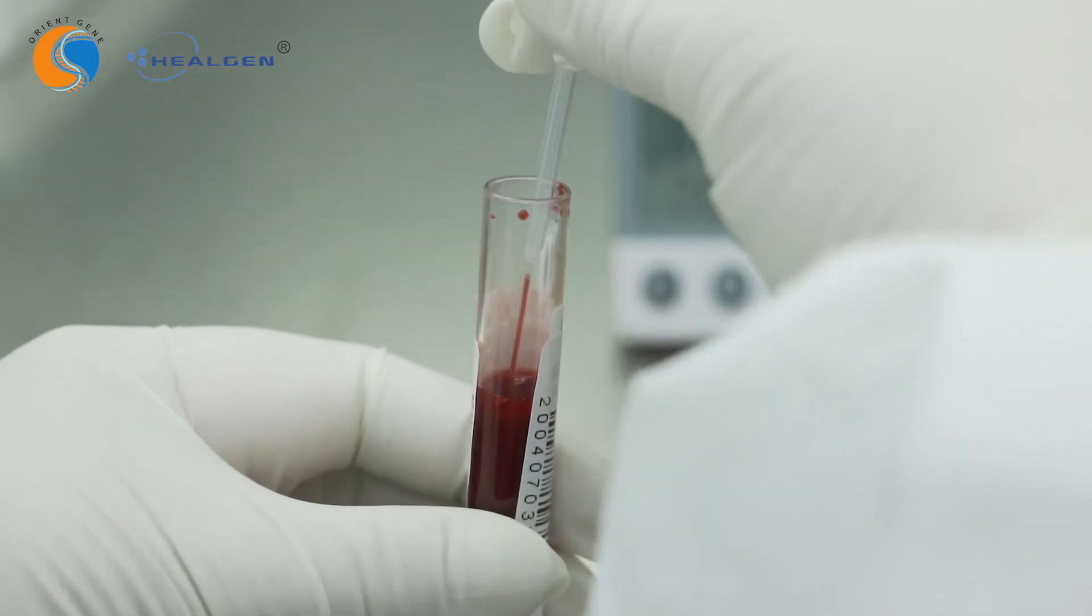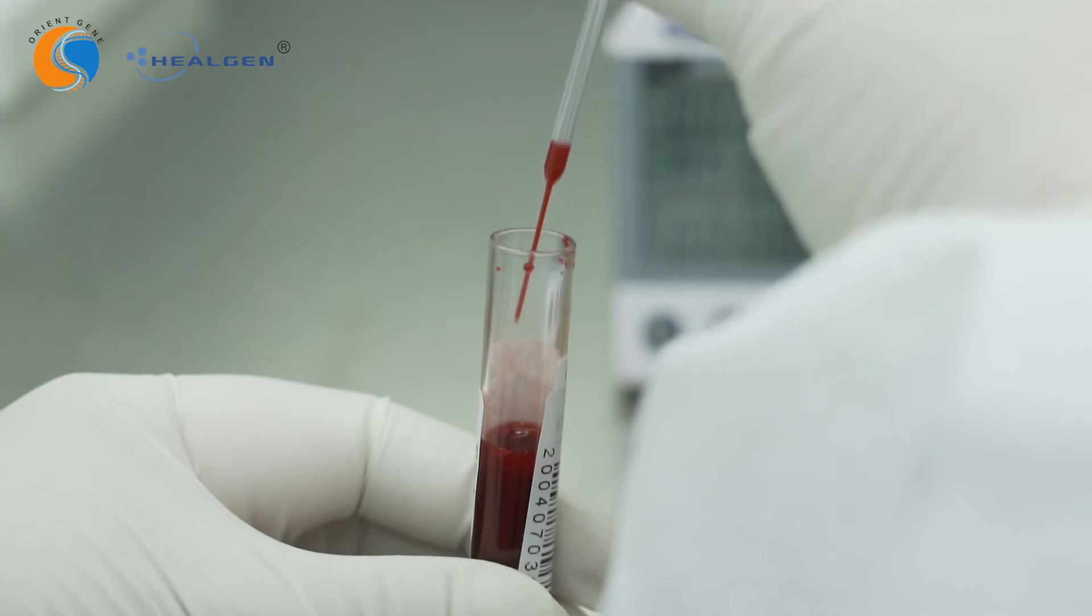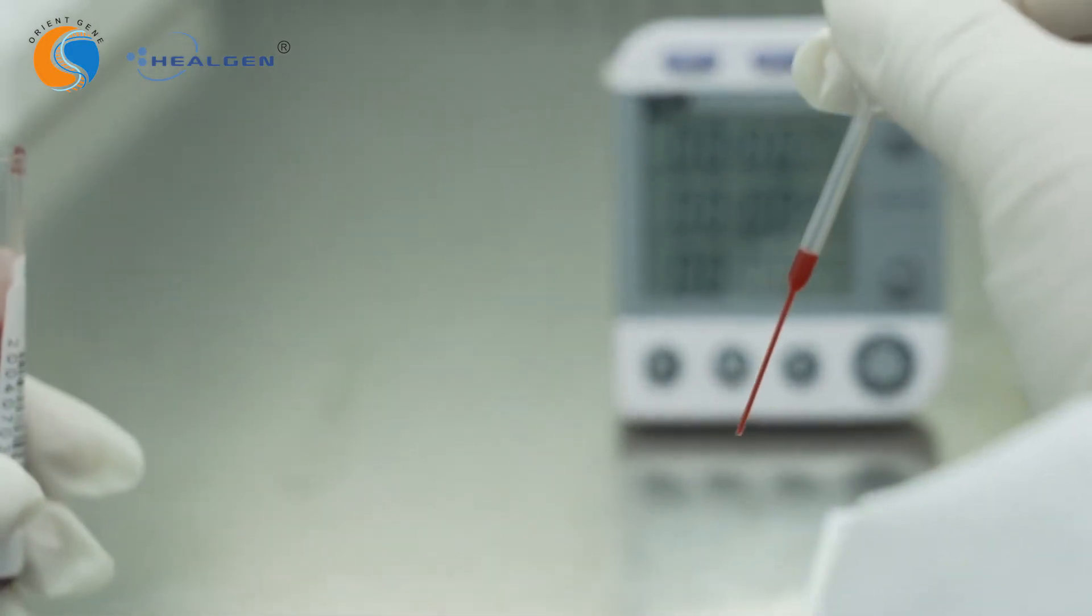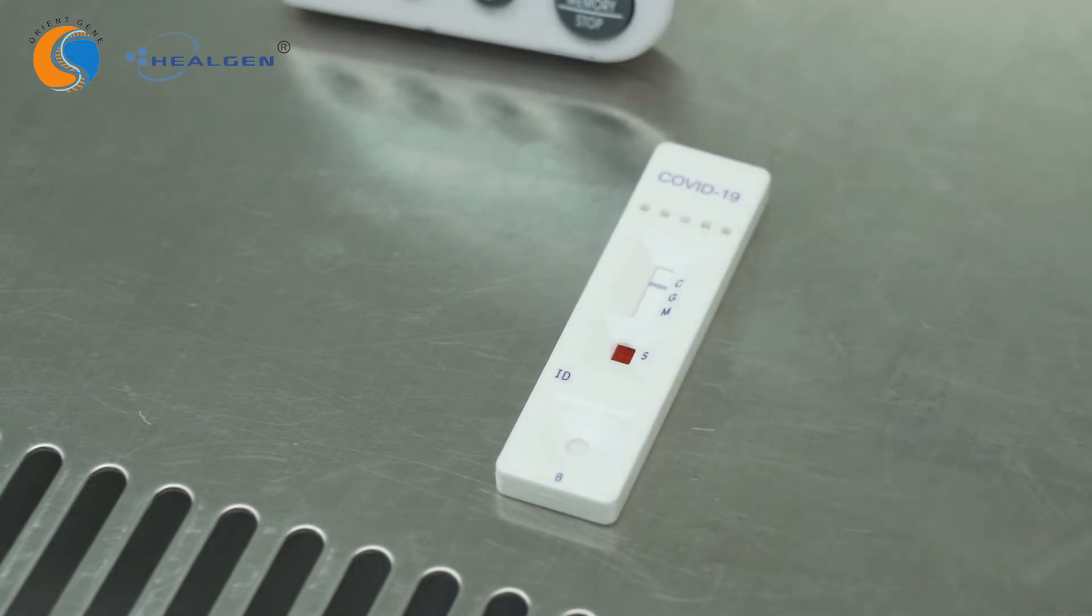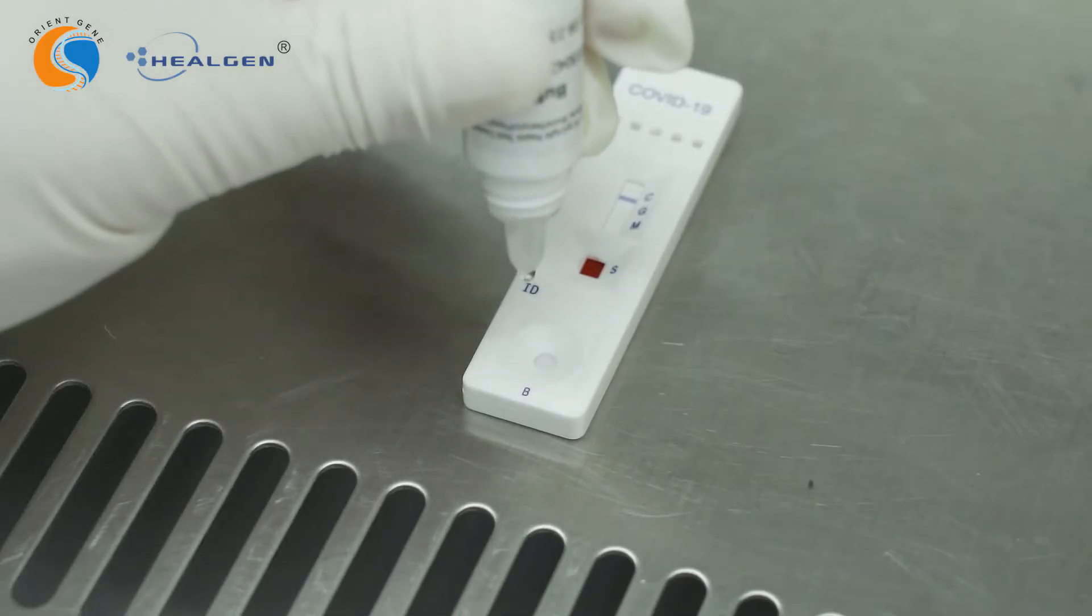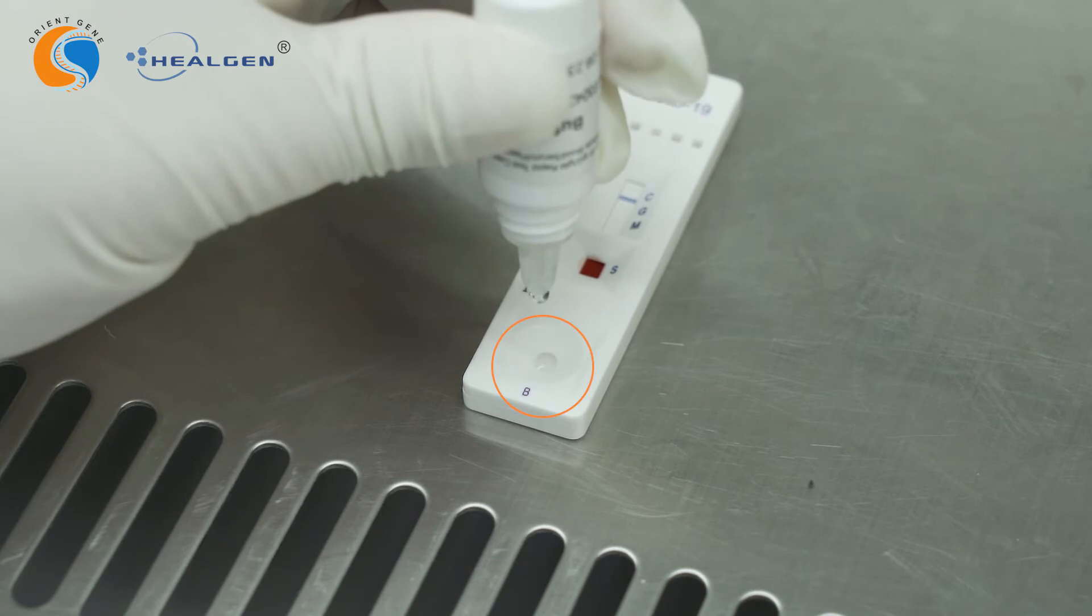For whole blood specimen, draw the specimen into the dropper. Hold the dropper vertically and transfer one drop of whole blood to the sample well. Then add two drops of buffer to the buffer well immediately after.